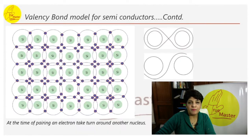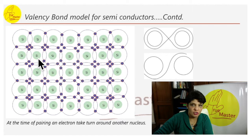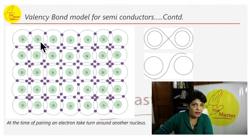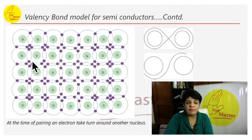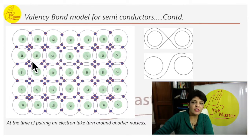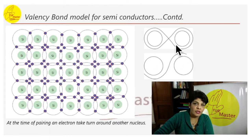Coming on to the covalent bond. Silicon has four electrons in its outermost structure — one, two, three, four are its own — and it has covalent sharing with the neighboring silicon atoms. When it becomes eight electrons in the outermost shell, the silicon atom is stable. This animation is showing you how an electron takes turns around the other nucleus, forming covalent bonding.